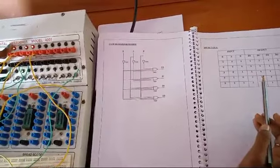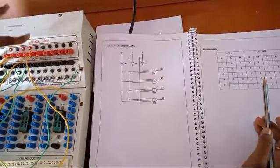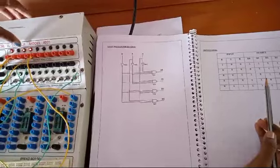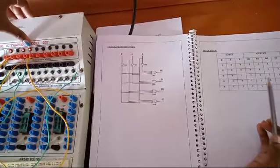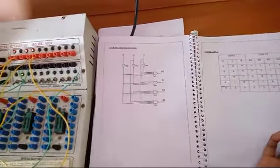The outputs are D0, D1, D2, D3, and D4. D0 is glowing, D3 is glowing, and D4 is glowing. This is the output. Thank you.